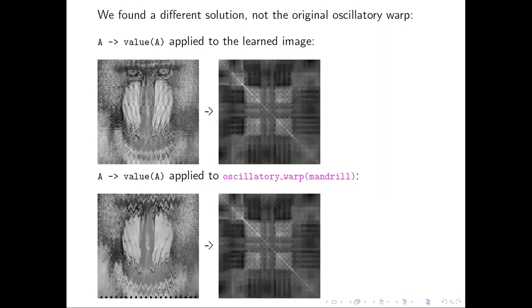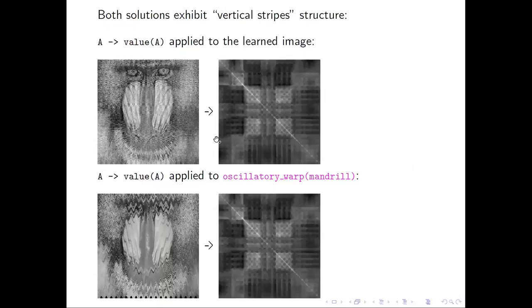And we find the solution, which is as good as the original oscillatory warp, but different. Both solutions exhibit vertical stripe structure, which is responsible for the resulting grains in the product.